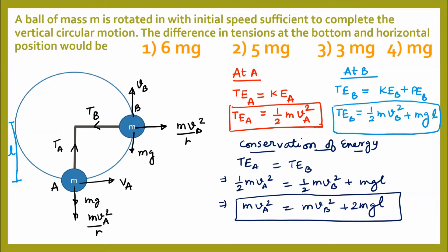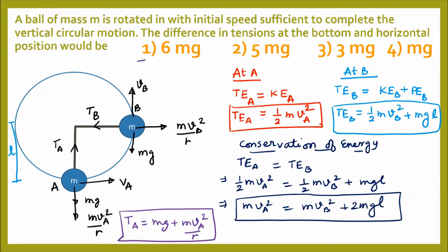Now the tension equations are: T_A = mg + mv_A²/r and T_B = mv_B²/r. We also have the energy relation mv_A² = mv_B² + 2mgr. We now have all the important relations needed to find the difference in tensions.